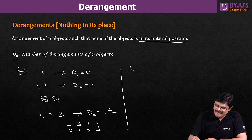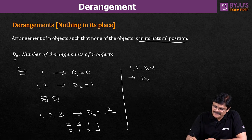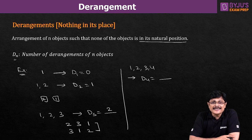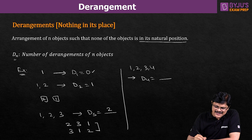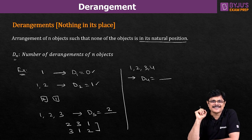Now if I have four numbers, how many derangements are possible? What is d4? You can list all possible arrangements and check that no number is in its natural position. Some people see d1 is 0, d2 is 1, d3 is 2 and say d4 is 3 — please don't make such illogical generalizations. d4 is not 3.